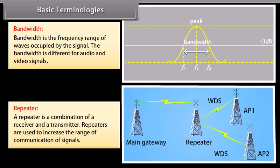A repeater is a combination of a receiver and a transmitter. Repeaters are used to increase the range of communication of signals.